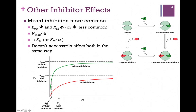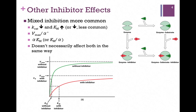In mixed inhibition, Vmax is lowered by factor alpha prime and Km is increased by factor alpha. We might not change them both to the same degree, which is why we have two different expressions for alpha. The inhibitor binds either the free enzyme or the enzyme-substrate complex, and in either case, so long as the inhibitor is bound, we cannot convert substrate to product. It does have an impact on substrate binding — the substrate still binds, but not as well — and that's why Km generally increases, though there are rare cases where a mixed inhibitor actually lowers Km.